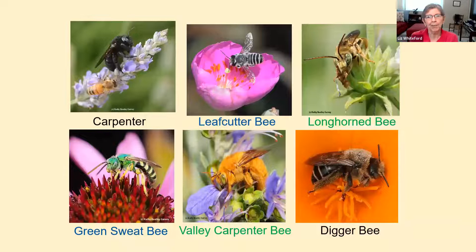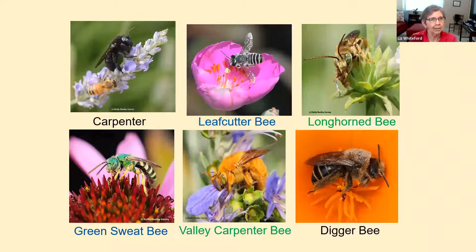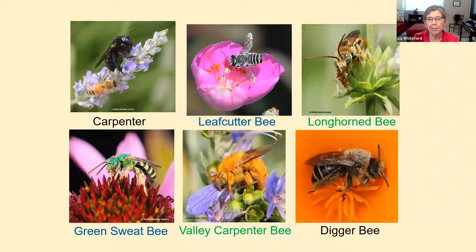Here are some examples of other native bees in our area. There's the carpenter bee, the leaf cutter who takes half-moon shapes cut from leaves to build little cases in which to lay eggs one after another. The longhorn bee on the upper right. On the bottom, the green sweat bee, which is very common. Another carpenter bee called the valley bee in orange. And then a digger bee, which is one of the native bees that digs in the ground.